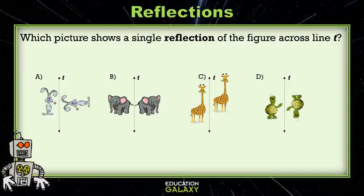Let's look at an example of the reflections. Which picture shows a single reflection of the figures across line T? Okay, for A, the rabbit is standing up, but then when he flips across the line, he turns around to his side. So that can't be right.